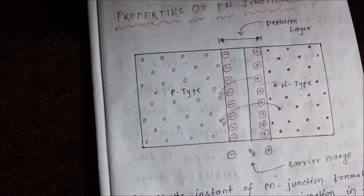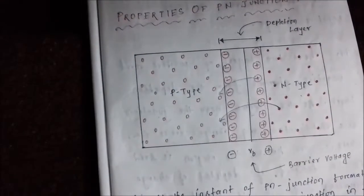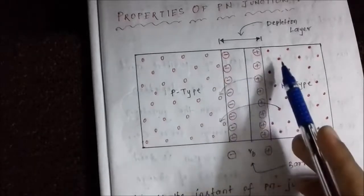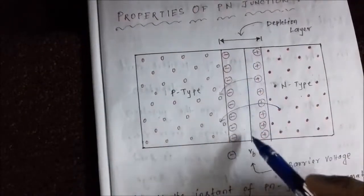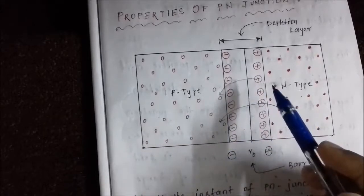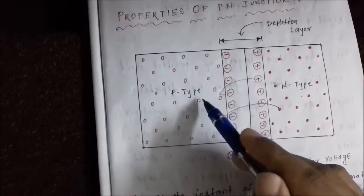There is a layer of opposite charges created near the junction. This induces an electric field in the positive-to-negative direction. This electric field generates an electric potential, which is called the barrier voltage or barrier potential. As electron-hole recombination occurs near the junction, the area immediately adjacent to the junction on both the P type and N type sides gets depleted of charge carriers.